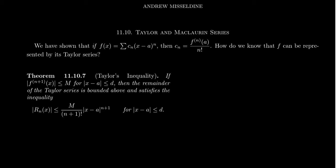then the remainder of the Taylor series is bounded above and satisfies Taylor's Inequality right here. The remainder R_n(x) is going to be less than M over (n+1)! times |x - a|^(n+1), while x is sufficiently close to the center. Let me give you more explanation of what's going on here.